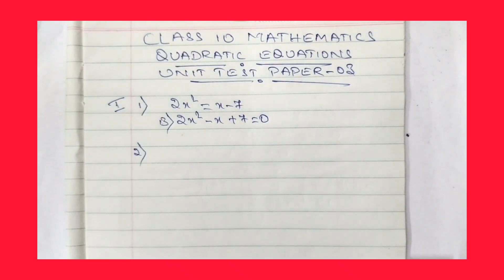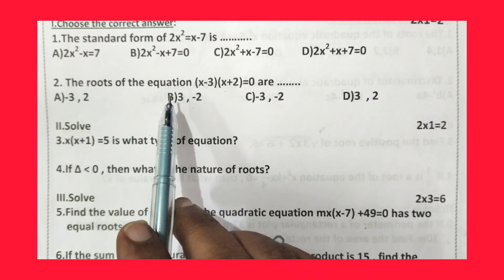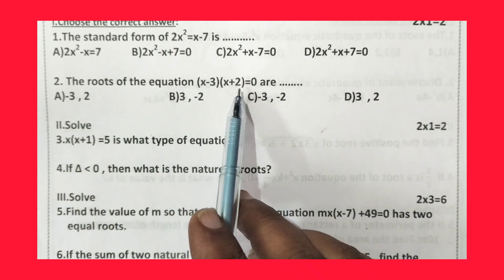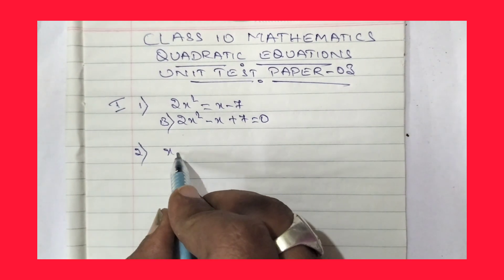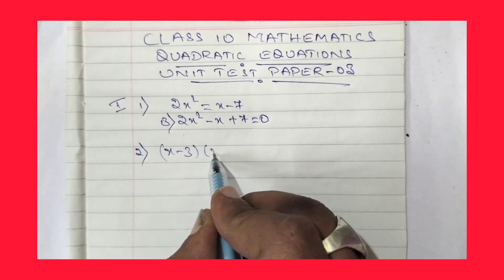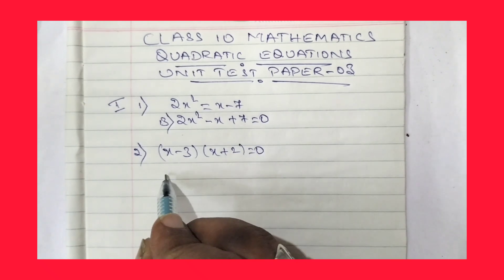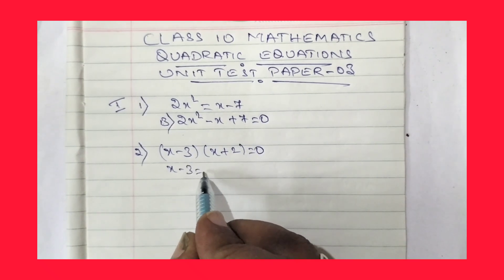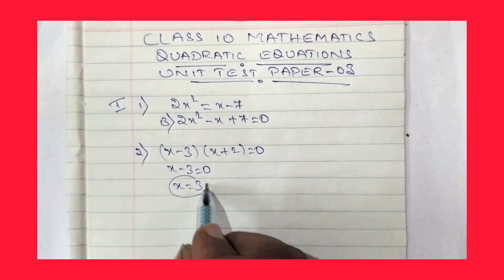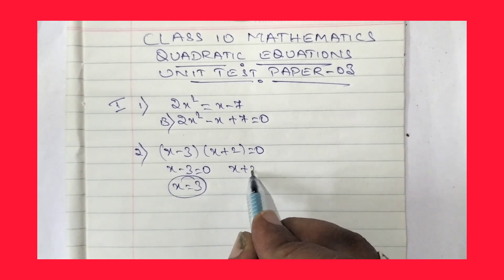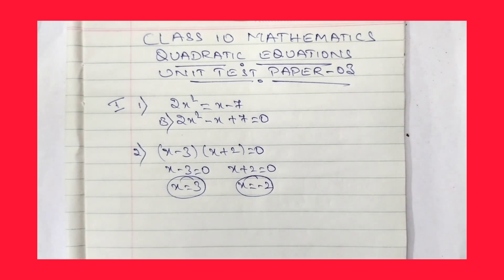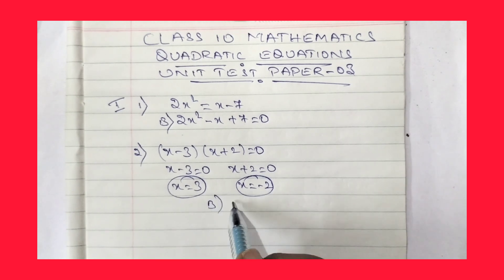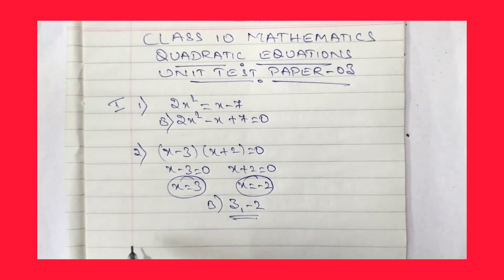Now let us move for question number 2. The roots of the equation (x - 3)(x + 2) = 0 are dash. So, x - 3 = 0 gives x = 3, and x + 2 = 0 gives x = -2. So the roots are 3 and -2. Option B: 3, -2 is the right answer.